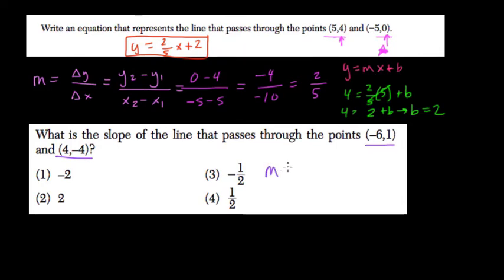So m is slope, delta y over delta x, right? So we subtract our y values, get that difference, and put it over the difference of our x values.